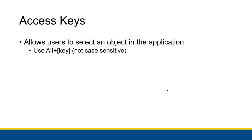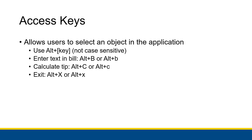You can use the access key to actually access different objects in the application without using your mouse. For example, if you want to enter text in the bill, instead of moving your mouse cursor over and clicking on the text box, you can press ALT and B. It doesn't matter if it's uppercase or lowercase B — if you have caps lock on or something like that, none of that matters. That access key will work. If you want to calculate the tip, you can press ALT and C, and if you want to exit the program, you can press ALT and X.